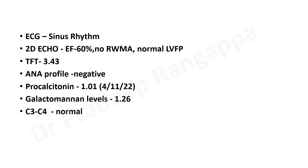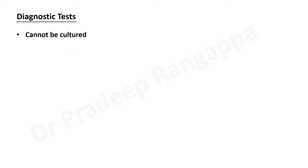X-ray would not tell you PCP — ground glass opacities seen on X-ray or CT can look varied and could be part of PCP as well. The diagnostic tests currently available for PCP: culture is not an option because PCP, being a fungus, cannot be cultured and does not grow in culture. The standard traditional way is staining — you get sputum and perform staining to show the trophic forms and cystic forms of PCP.